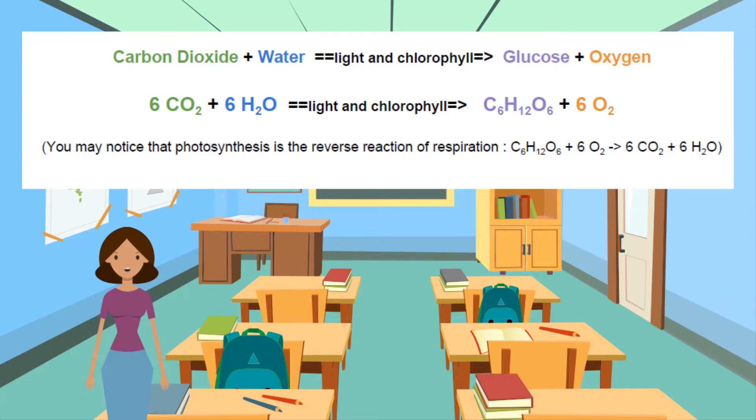Chloroplasts trap light energy and convert it into chemical energy. The chemical energy is stored by the formation of carbohydrates. You need to know how to write the word equation and the chemical symbolic equation for photosynthesis.